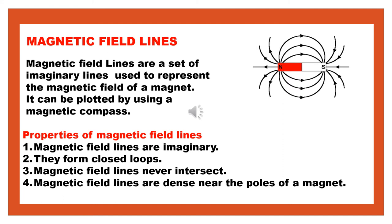Magnetic field lines are dense near the poles of a magnet — the number of lines will be more near the poles. As we saw in the topic about magnetic field, the iron filings get attached more at the poles of the magnet because the strength is more there. Because of that, the magnetic field lines are dense near the poles of a magnet.